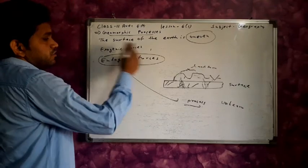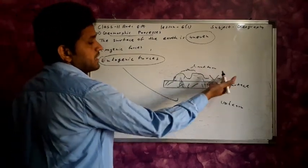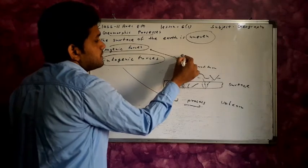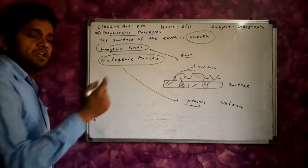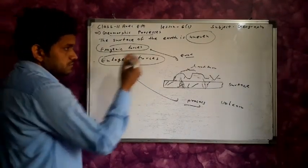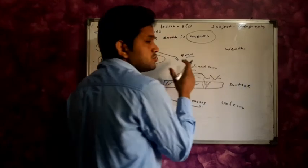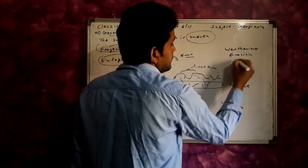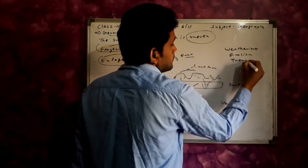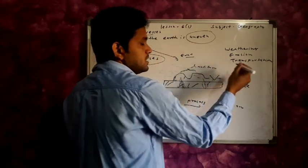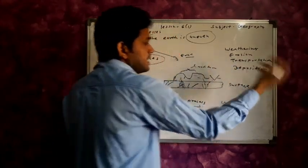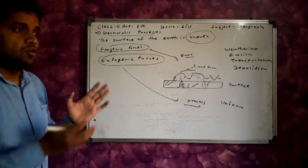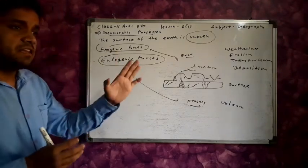Now, exogenetic forces try to even the surface. The exogenetic processes include: weathering, erosion, transportation, and deposition. All these processes try to even the earth surface, but they are not able to create a 100% even surface.